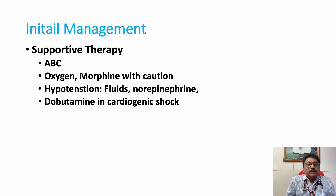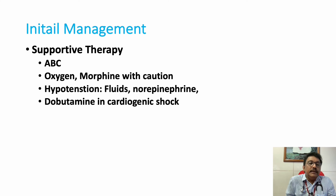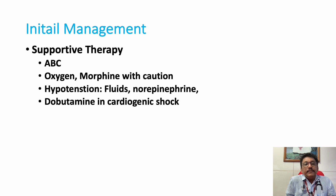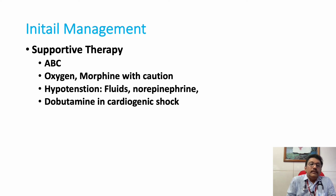Initial management includes supportive therapy: airway, breathing, and circulation. In massive pulmonary embolism, there is reduced blood supply to the left ventricle causing hypotension and shock, as well as hypoxemia. Oxygen should be administered; morphine can be given but may cause hypotension. Hypotension should be treated with IV fluids and noradrenaline; dobutamine can be added once systolic BP reaches 100 mmHg.